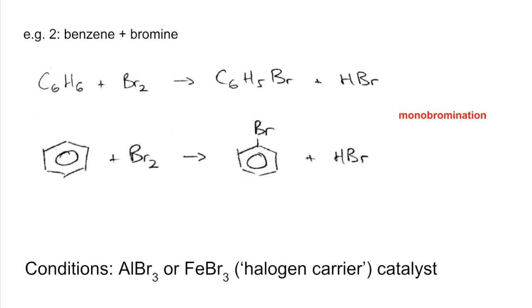Conditions: we need a catalyst AlBr3 or FeBr3, often referred to as a halogen carrier. You can also use iron - the iron reacts with the bromine first to form FeBr3 which then acts as the catalyst.